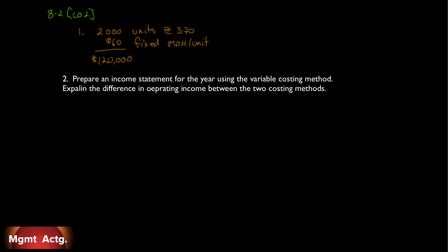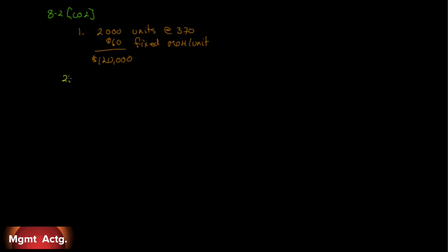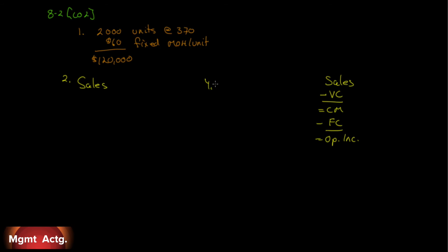The second part asks us to prepare an income statement using the variable costing method and explain the difference in operating income. Under variable costing we use the contribution format: sales minus variable costs equals contribution margin, minus fixed costs equals operating income. Sales remain the same at 4 million.